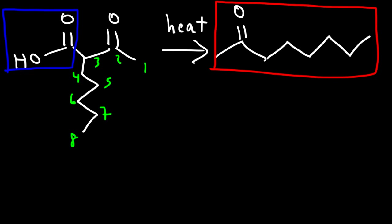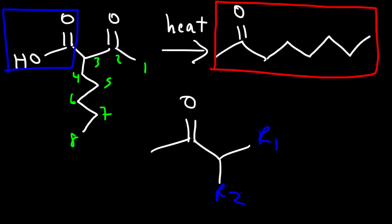That's it for the basic acetoacetic ester synthesis reaction. As you can see, it's very useful for making different types of ketones. But so far we've only considered ketones with one R group. We can try an example where we add two R groups. Here's the generic formula of ketones we can make — we can add the first R group or the second one, and we're adding the R groups to the alpha carbon of the ketone.